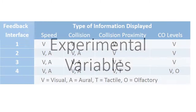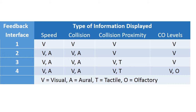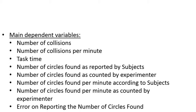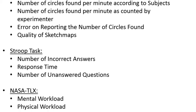The independent variables were the type and level of multisensory feedback subjects were exposed to. Interface 1 was a visual-only interface presenting all robot sensor data on the computer screen. Interface 2 added audio feedback. Interface 3 added vibrotactile feedback on top of Interface 2. Interface 4 added smell feedback on top of Interface 3. The dependent variables included performance, cognitive load, workload, presence, and health-related variables.